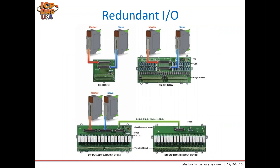This slide shows our redundant IO. The top shows the master and slave slot modules, and they're both connected to our DN boards. The DN boards provide dual access to the same IO points, so you will have IO redundancy for both the master and slave devices.